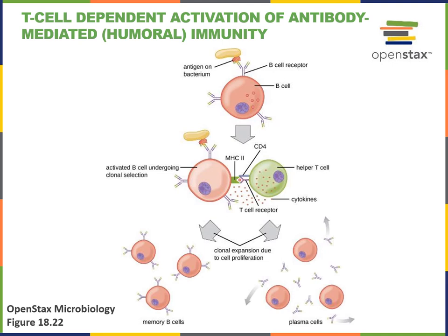T cell dependent activation of antibody mediated immunity occurs when an antigen that is not repetitive binds to the B cell receptor. The B cell will perform phagocytosis to engulf the pathogen, bringing that antigen within and then packaging that antigen into an MHC2 protein. The B cell will then become a professional antigen presenting cell, using the MHC2 protein to display antigen to a helper T cell that has a CD4 T cell receptor complex.